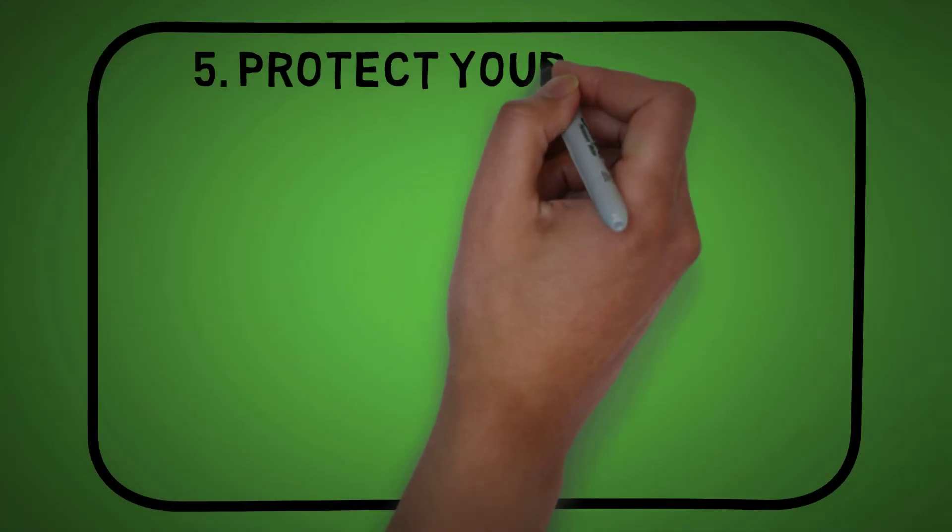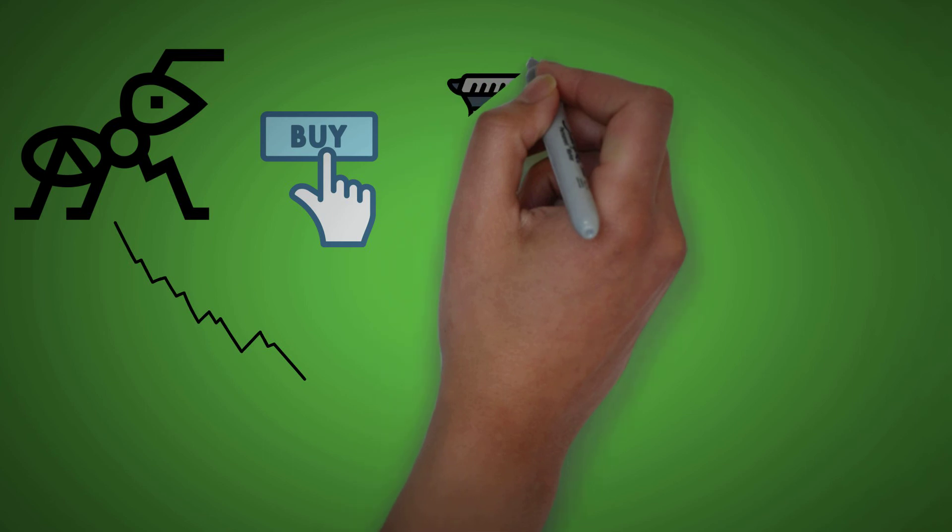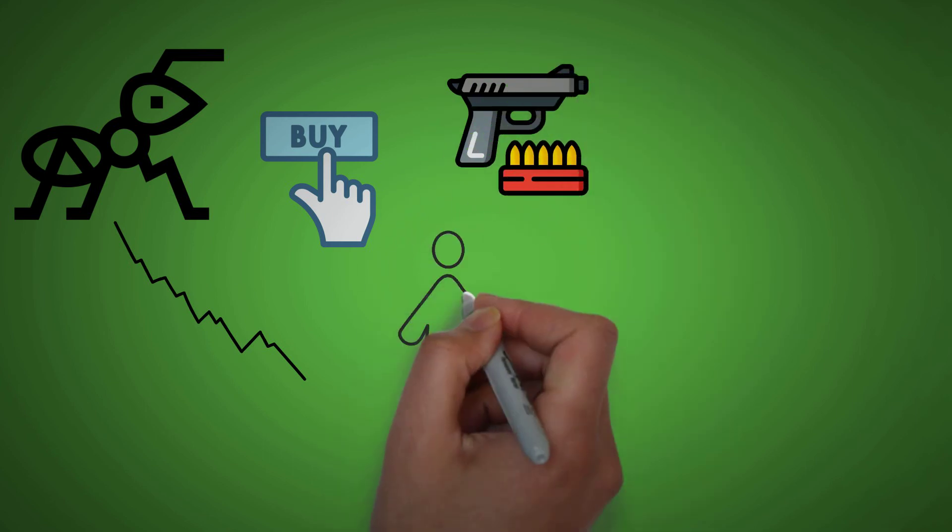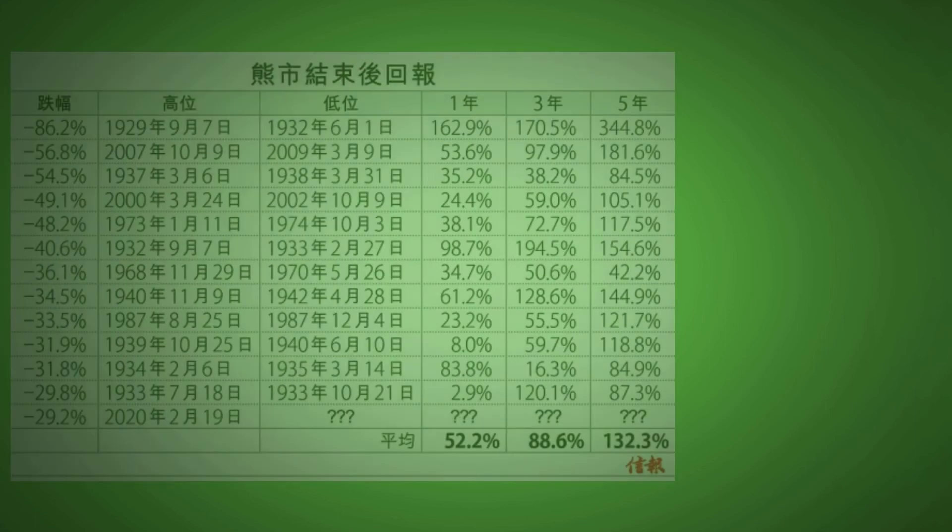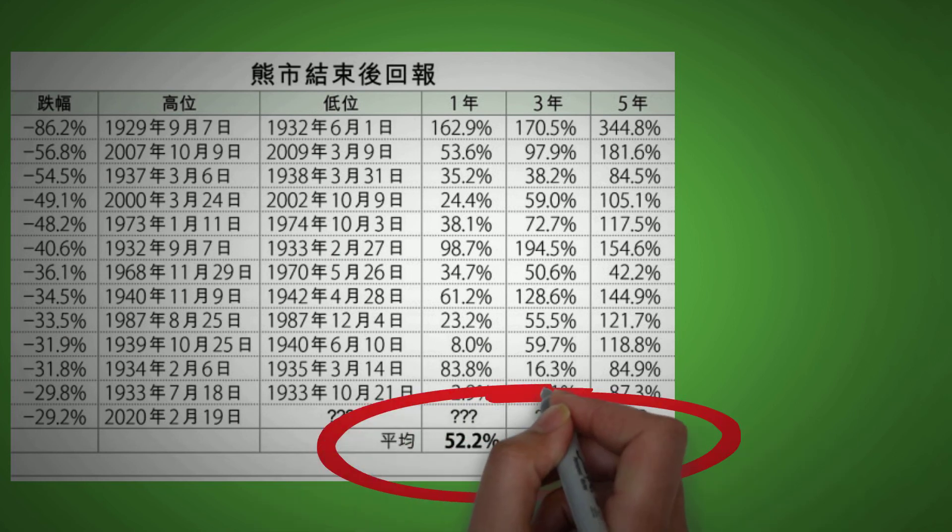Number 5, protect your troops. If we were too antsy and decided to buy back every week the market dropped, our portfolio would definitely be deep in the red with no ammo to fire back. Why don't we just hang back, observe, and wait till things show a sign of life. Even if we miss out on the first 10 to 15 percent bounce, there is still 100 plus percent left in the next 5 years, as shown from the charts before.